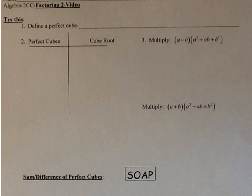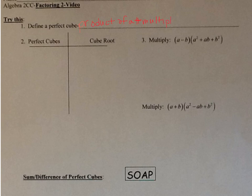A perfect cube comes from the product of a number multiplied by itself 3 times. Let's make a list of perfect cubes — we'll skip zero and start with 1.